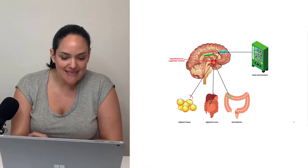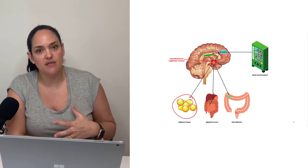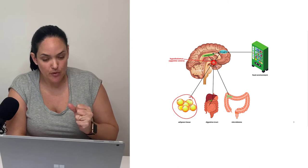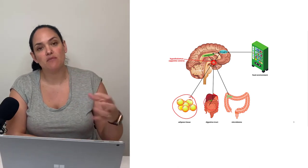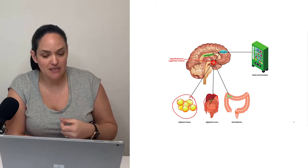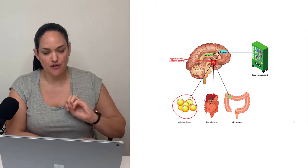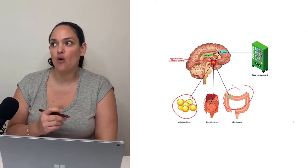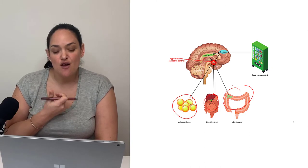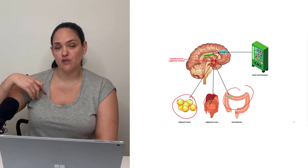We're going to learn that adipose tissue sends signals to the hypothalamus primarily through leptin. Our digestive tract sends a number of signals that also have receptors in the hypothalamus — for instance, ghrelin or cholecystokinin. We'll also look at the microbiome, how some of its metabolites and vagal afferents also communicate with the hypothalamus.